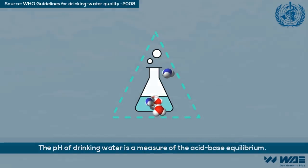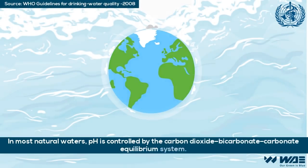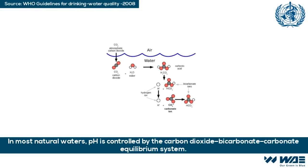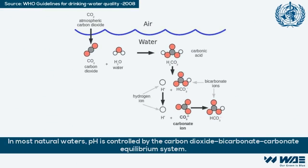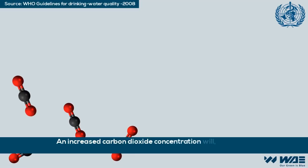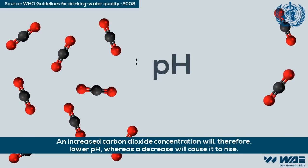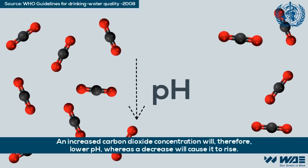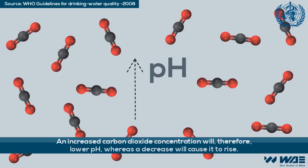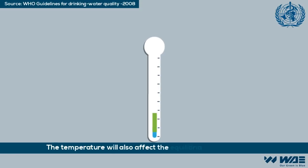In most natural waters, pH is controlled by the carbon dioxide–bicarbonate–carbonate equilibrium system. An increased carbon dioxide concentration will lower pH, whereas a decrease will cause it to rise. Temperature will also affect the equilibria and the pH.